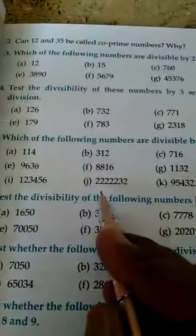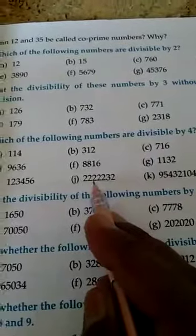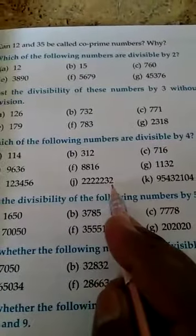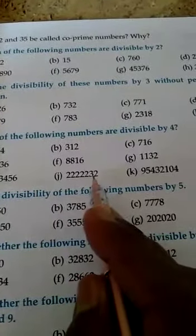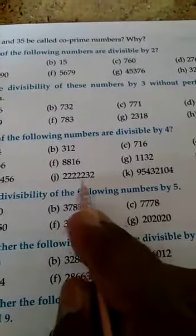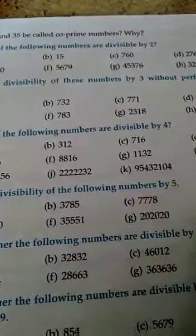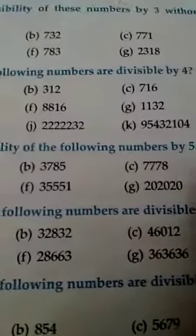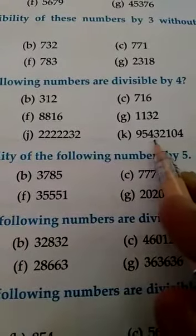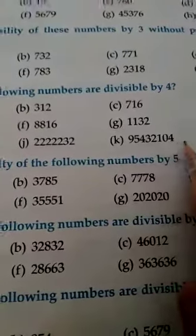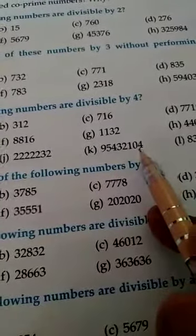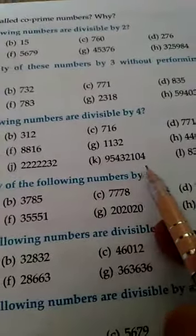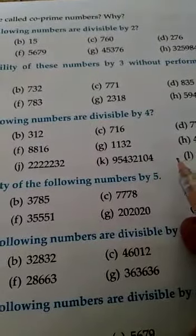Take some more examples. For 22,22,232 — you just check the last two digits: 32. Since 32 is divisible by 4, the whole number is divisible by 4. Take one more example: 9,54,32,104 — the last two digits are 04, which is 4, and 4 is divisible by 4. So this number is also divisible by 4. In this way you will do all the questions.